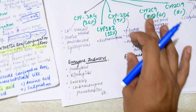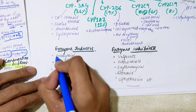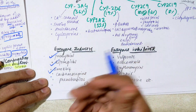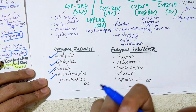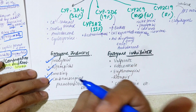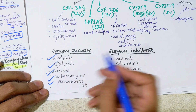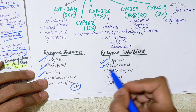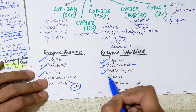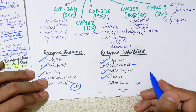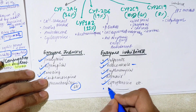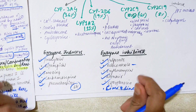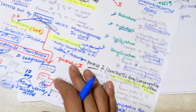This dose adjustment concept applies only to microsomal enzyme-metabolized drugs like warfarin. Heparin, metabolized by non-microsomal enzymes, is unaffected. Enzyme inducers include: phenytoin, rifampicin, smoking, carbamazepine, and phenobarbital. Enzyme inhibitors include: valproate, ketoconazole, erythromycin, ritonavir (HIV protease inhibitor), ciprofloxacin, omeprazole, and cimetidine — these last two being proton pump inhibitors.